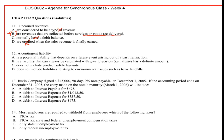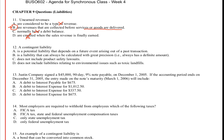Question 12: contingent liability. A contingent liability is something we think might happen but we're not sure whether it will or how much it will be — there's quite a lot of uncertainty. Option A says it's a potential liability that depends on a future event arising out of a past transaction — that's actually a pretty good definition. Option B says it can always be calculated with great precision — absolutely not. Option C says it does not include product safety — no, that's a classic example of a contingent liability. So the only good answer is A.